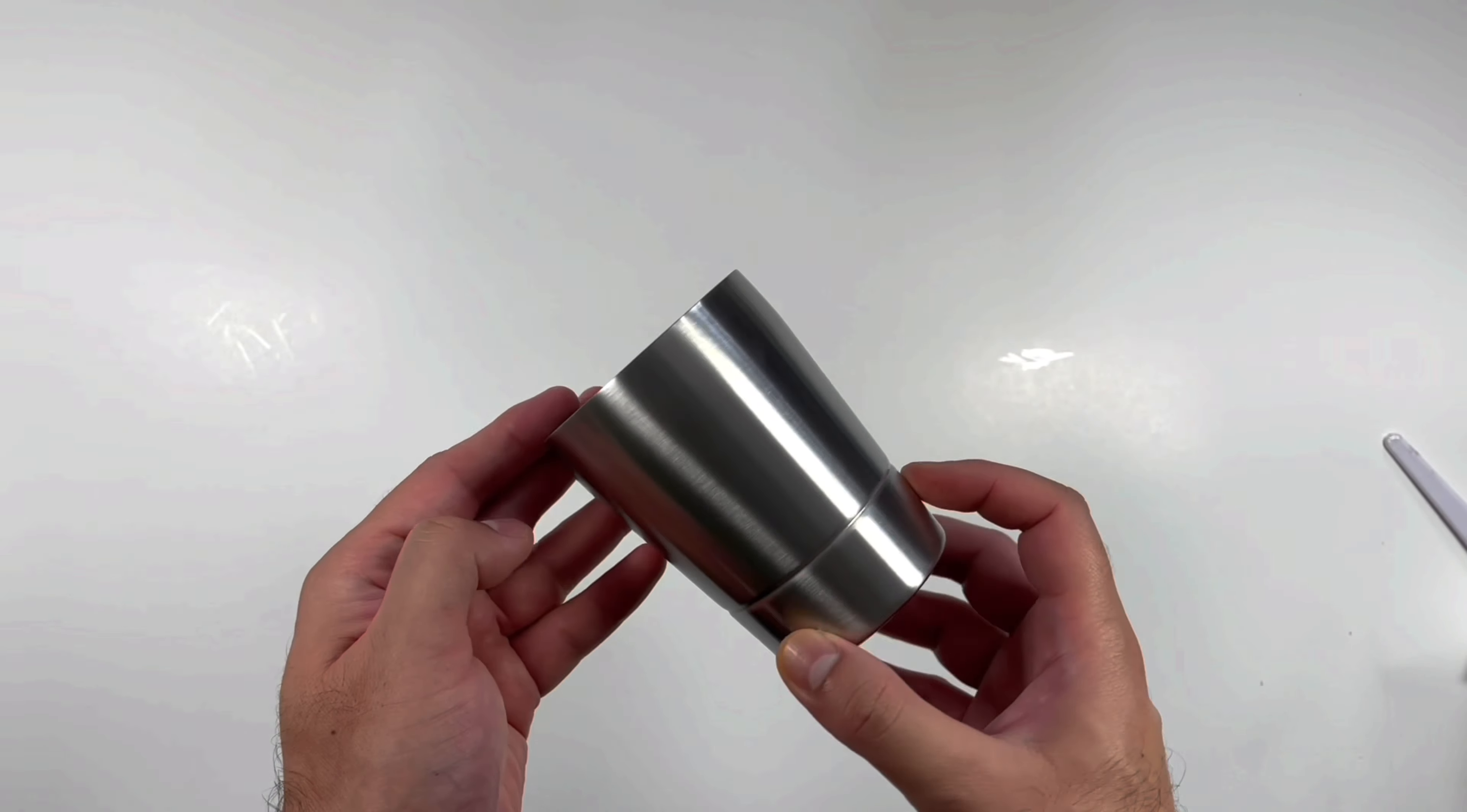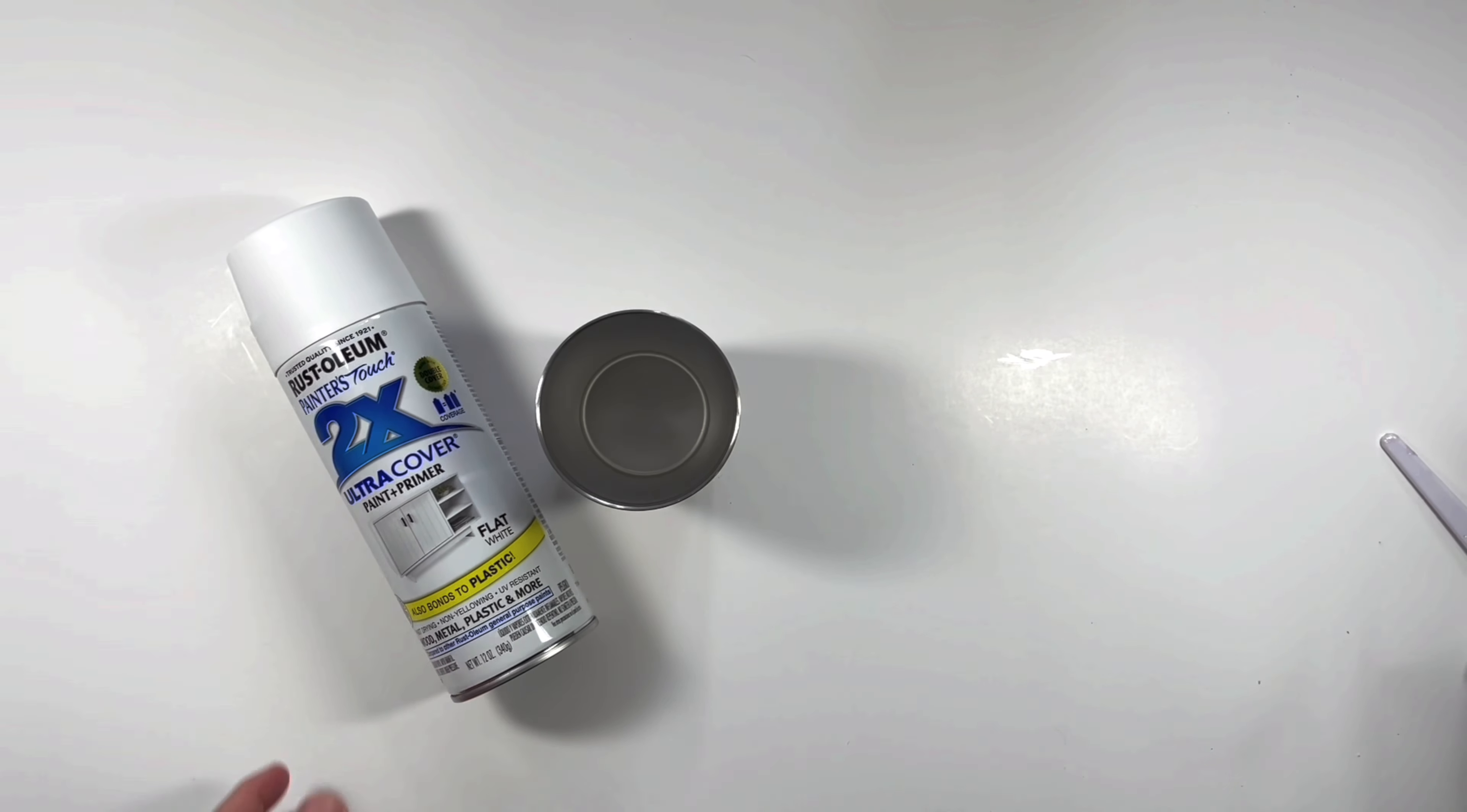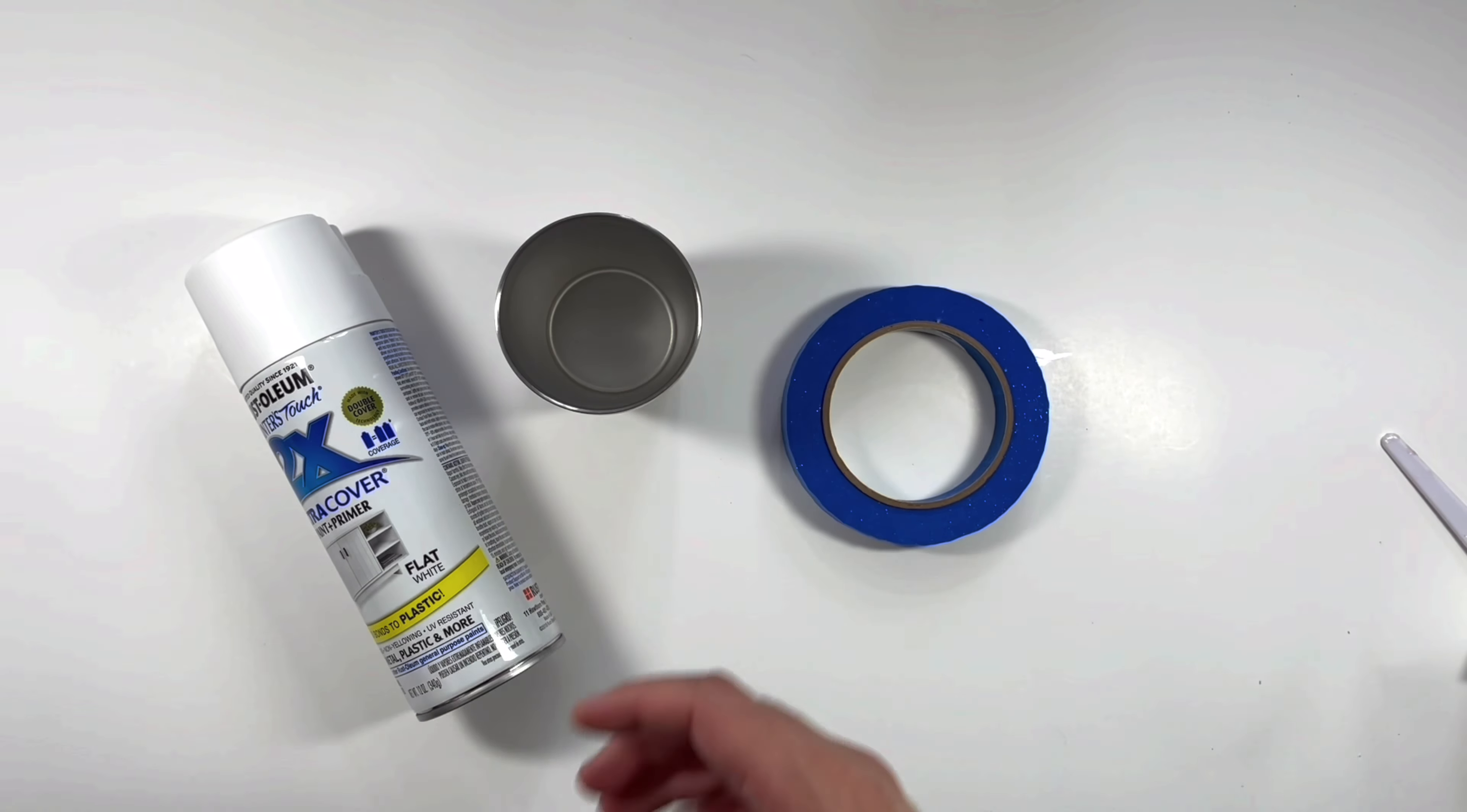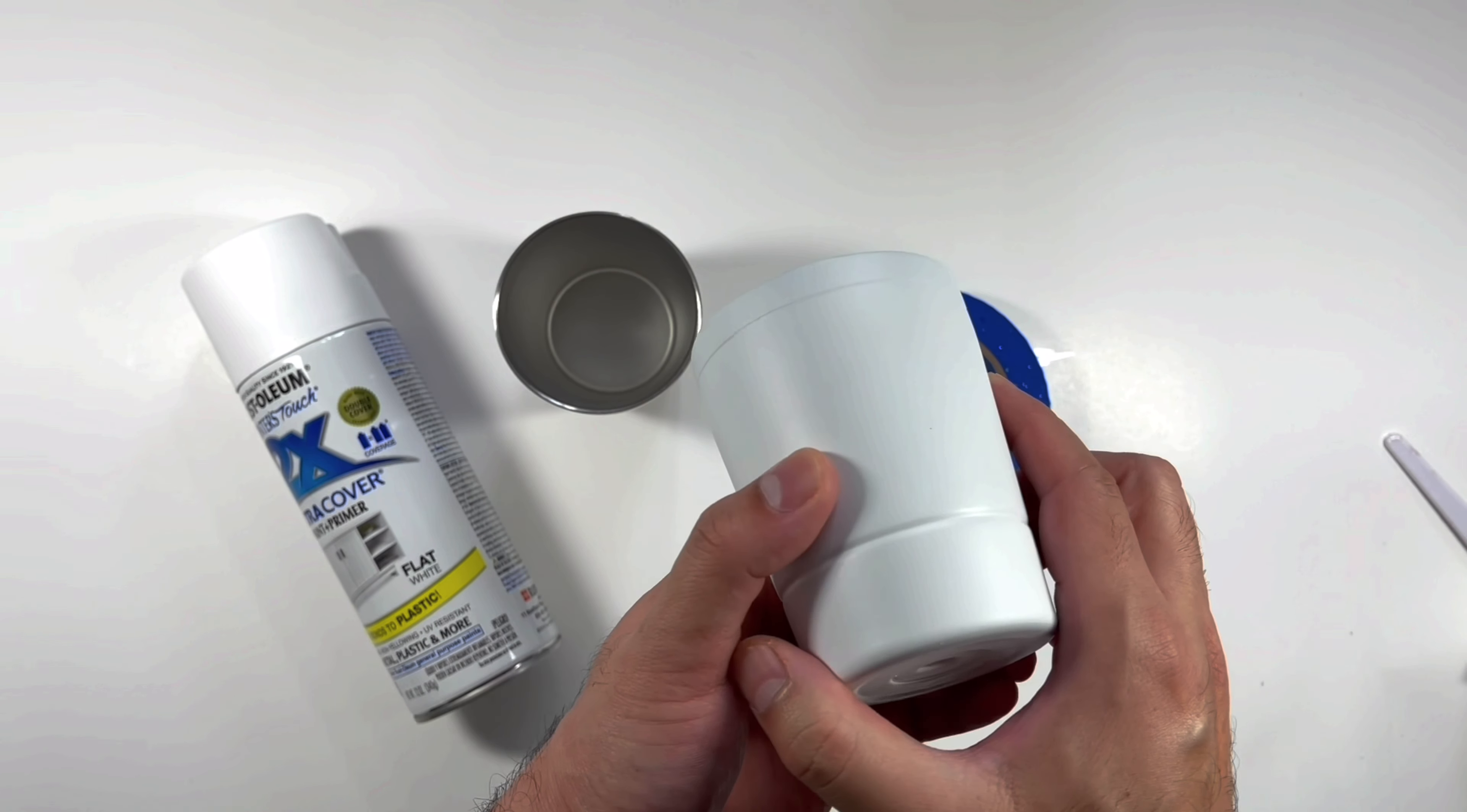This is a 10 ounce stainless steel insulated tumbler. I have sanded it and sprayed it with primer plus white paint. I have applied painter's tape on the top edge and inside the tumbler. And this is how it looks when done. This is the basic preparation before applying colors.